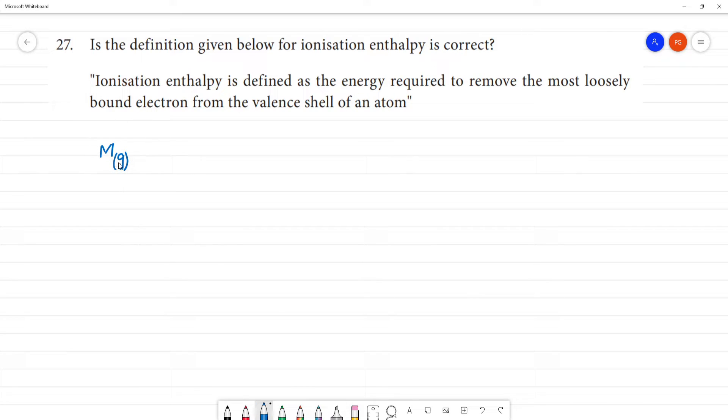If we remove an electron, this is in gaseous state and ground state. When we are supplying energy, we remove an electron.